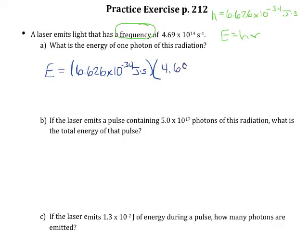which is 4.69 times 10 to the 14th inverse seconds. So if we look at this calculation, the units of seconds are going to cancel. We're going to be left with units of joules. This makes sense since we're calculating an energy.